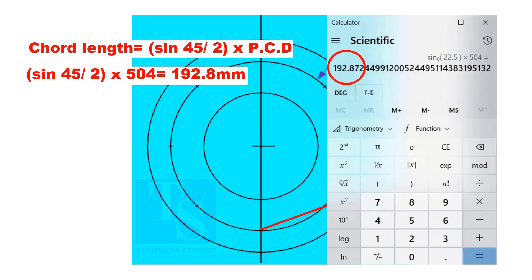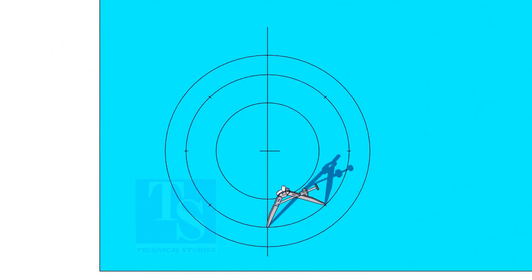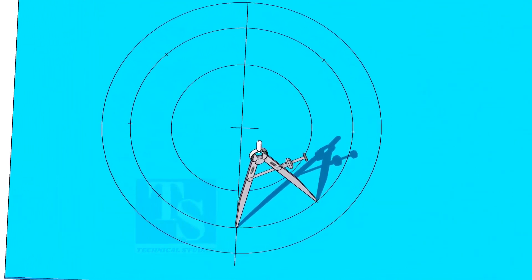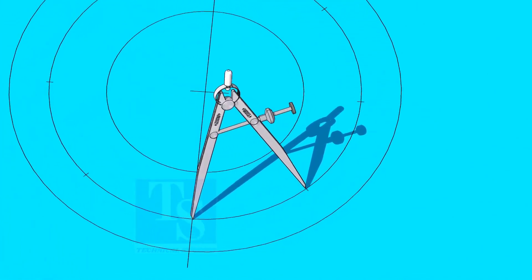The cord length is 192.8 millimeters. Adjust the divider to 192.8 millimeters and divide the PCD into 8 parts.